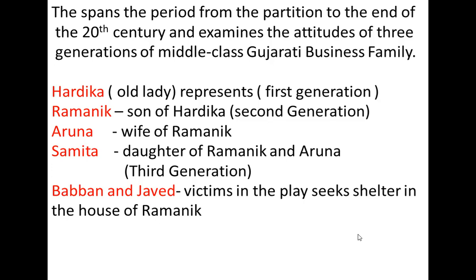Ramnit Gandhi is the son of Harvika and belongs to the second generation. He got married with a lady called Aruna, who is the most orthodox lady. Ramnit, son of Hari and Harvika, got married with Aruna.